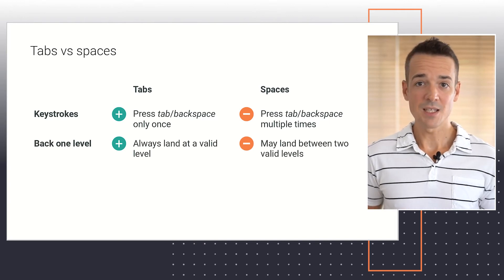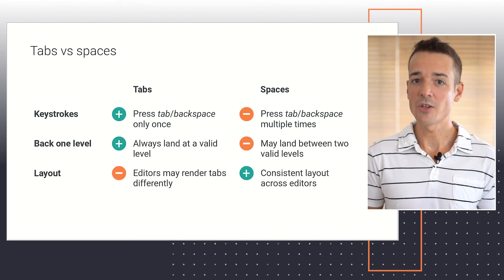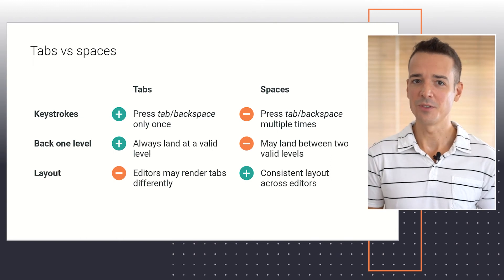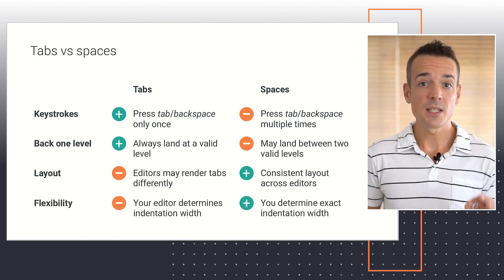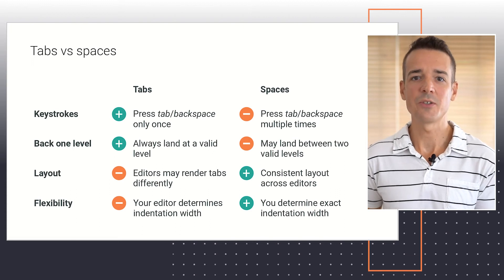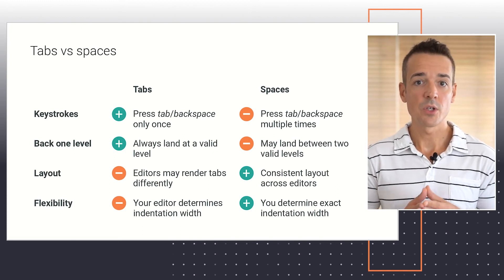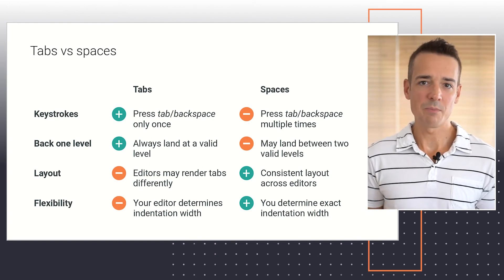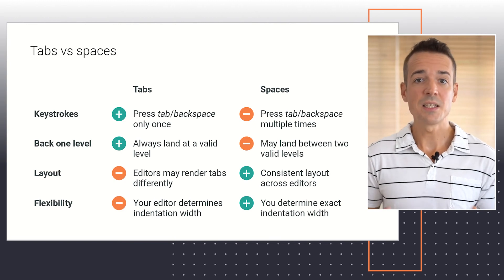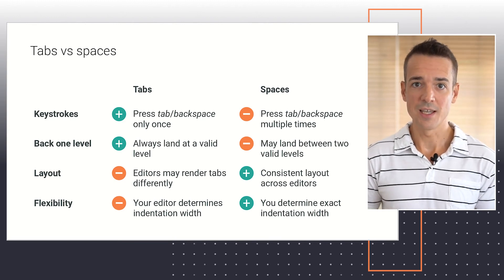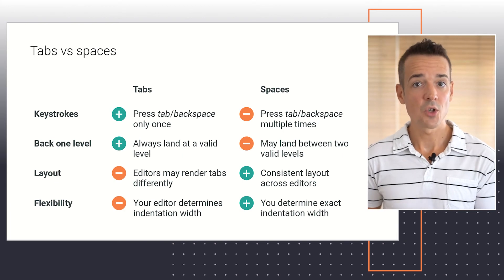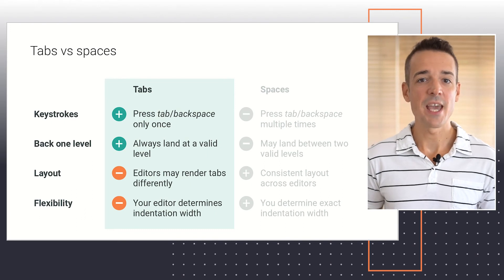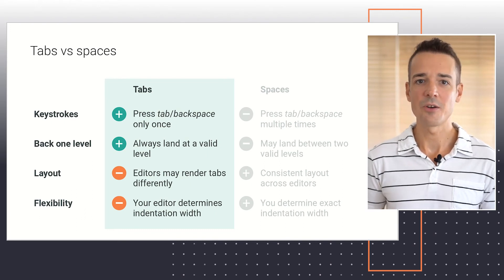In favor of spaces, though, we could argue a consistent layout across editors, while tab characters may be rendered with different widths by different tools. And on a similar note, spaces let you determine the exact width you want to use for each indentation level, whereas tabs restrict this width to your editor's configuration. In spite of both approaches being valid and widely used, it's important that we choose one option and stick to it throughout this course, and this option will be tabs. This preference is actually embedded in the behavior of our code editor, as I already pointed out in previous lessons.